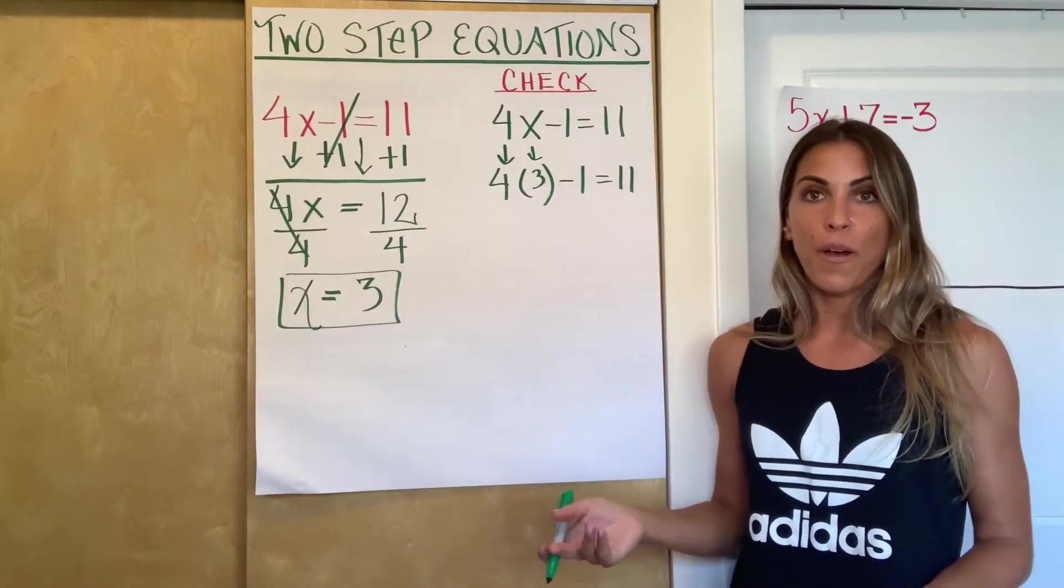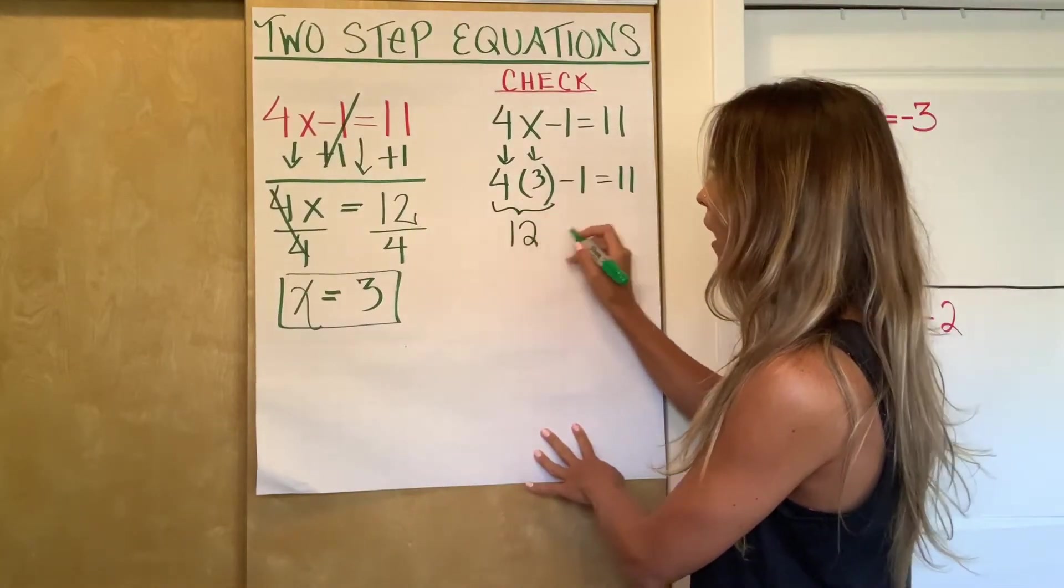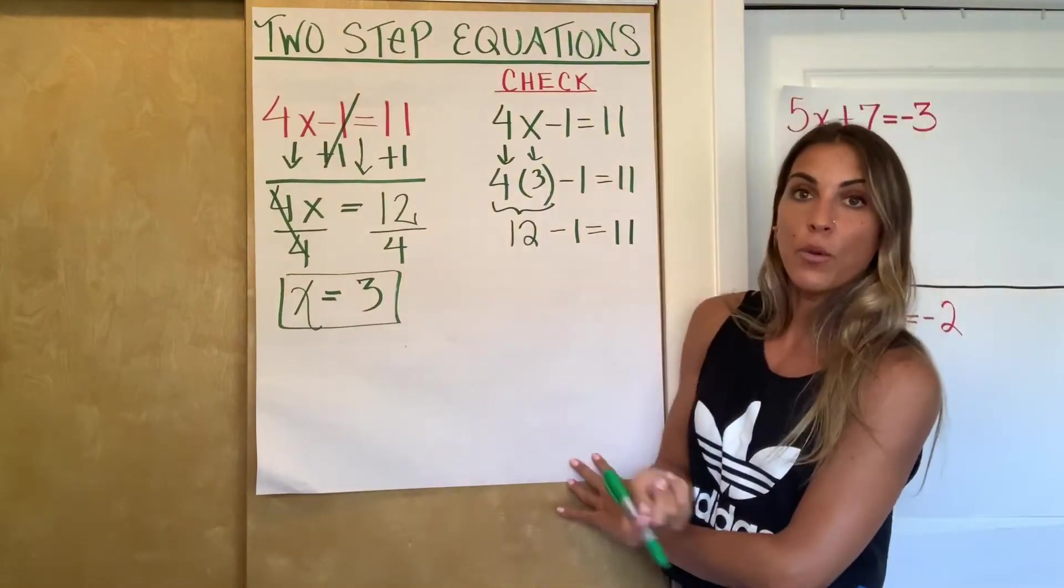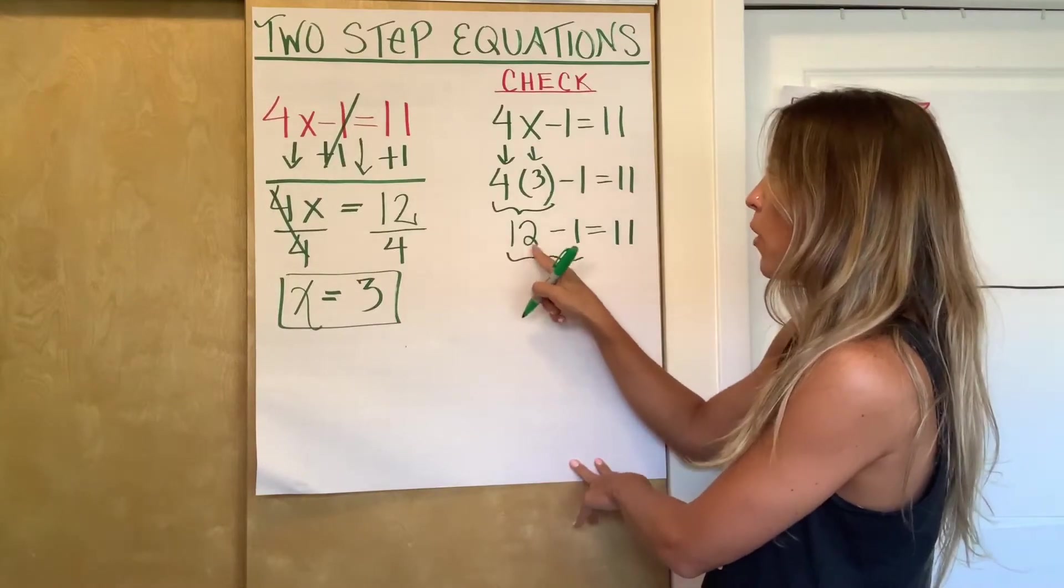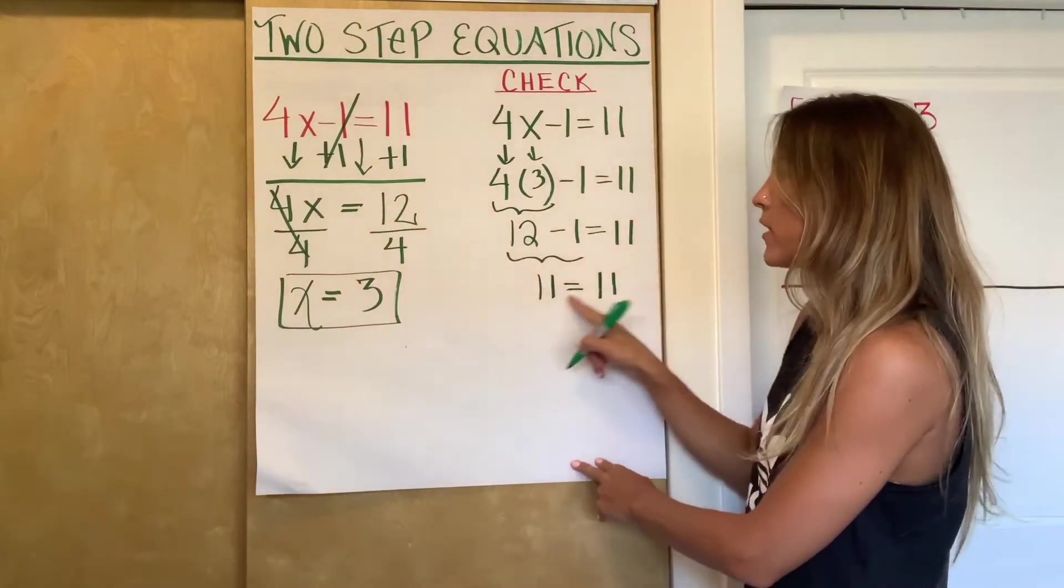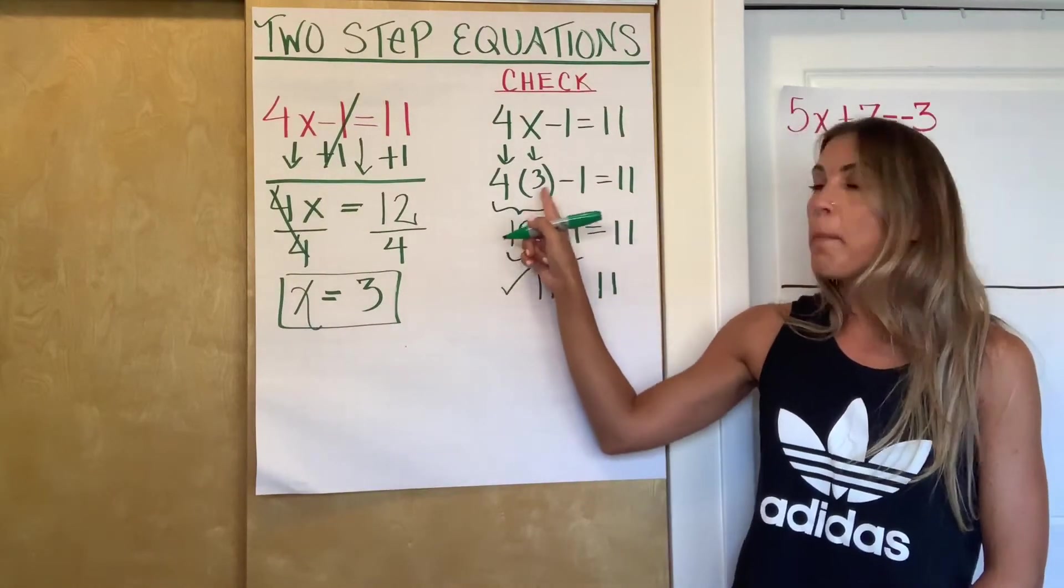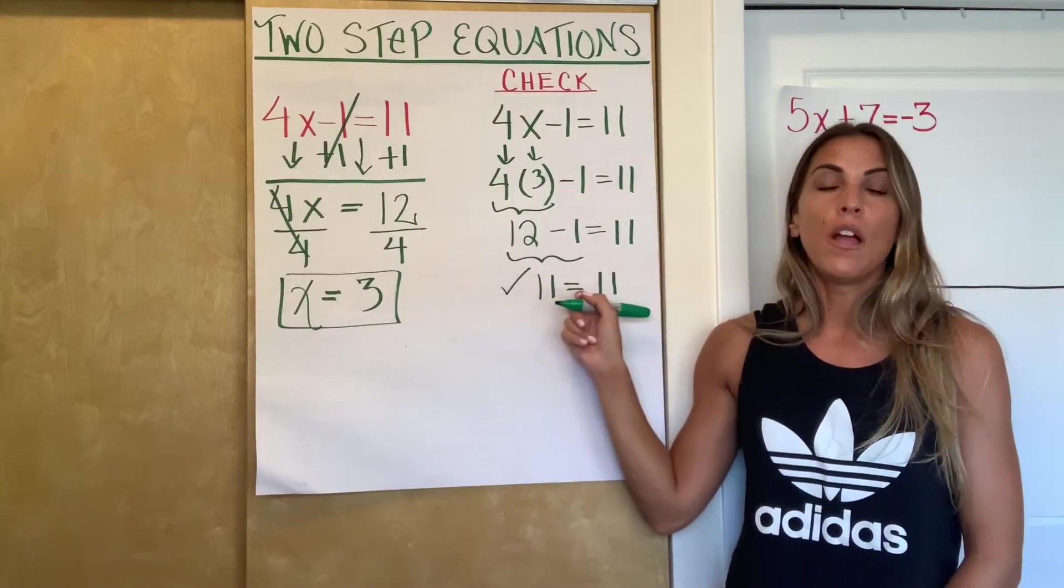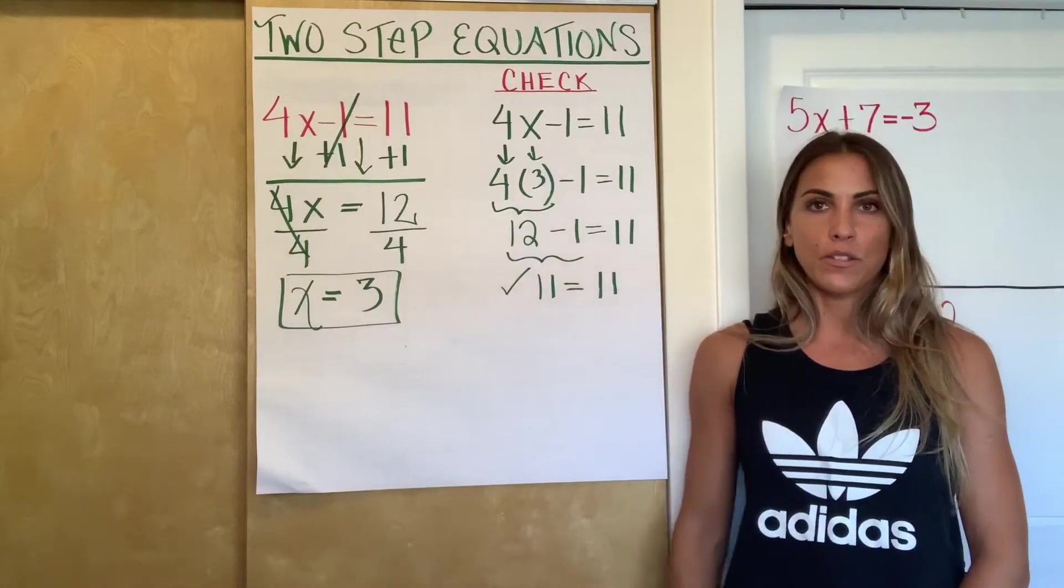And now I'm just going to follow my order of operations. So 4 times 3 is 12. Again, that minus 1 comes down, that equal sign comes down, that 11 comes down. I'm continuing to follow the order of operations. There's only one thing left to do, which is subtract. 12 minus 1 is 11. And remember in your check, you're always looking just to make sure that you've got a true statement at the end. Because what that means is that the number that you substituted for x made this equation true. Therefore, it is the number that is equivalent to x. So x is 3 is the correct solution.